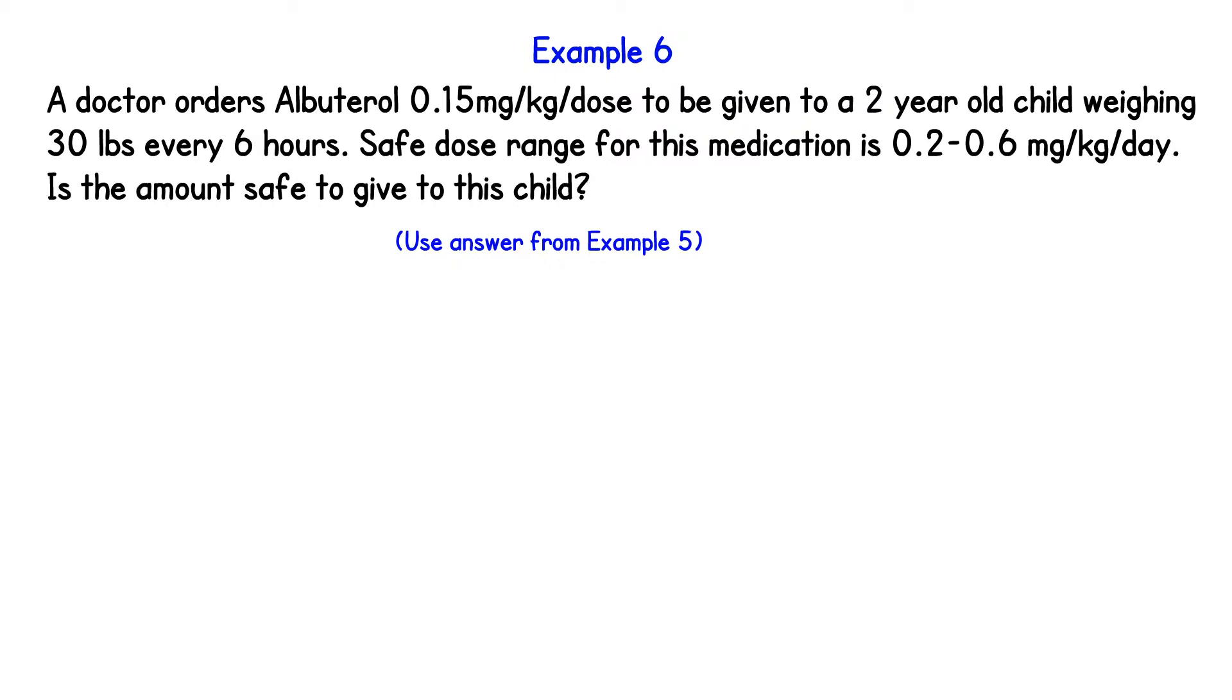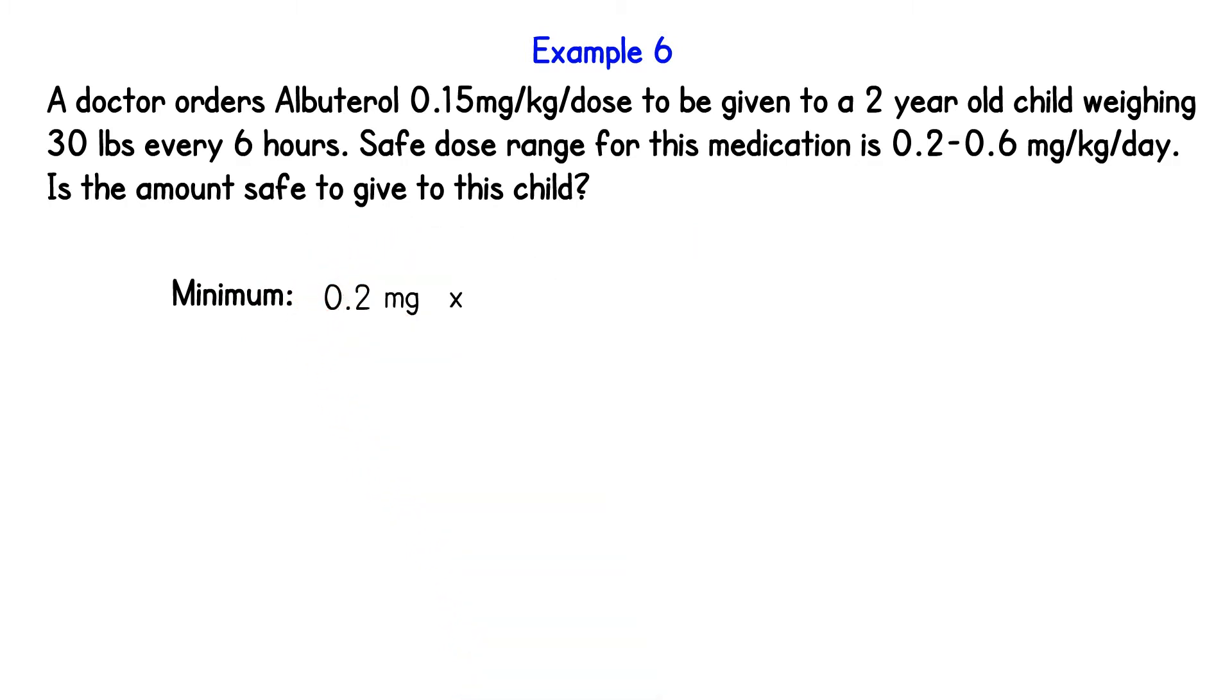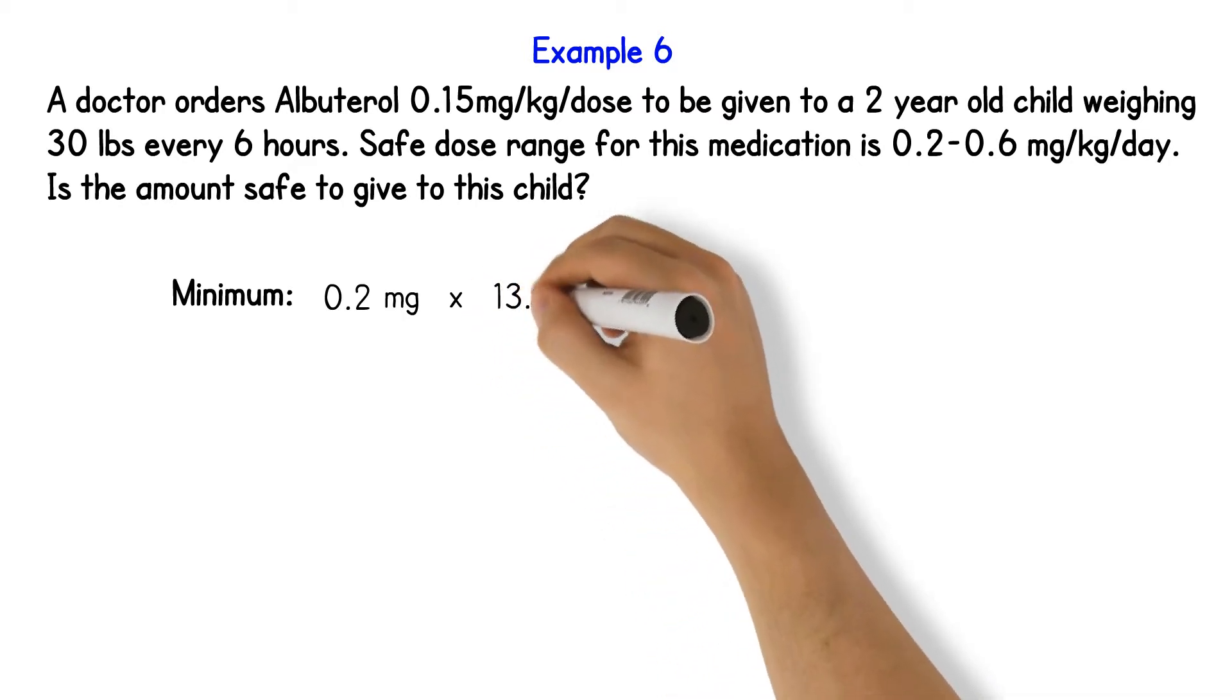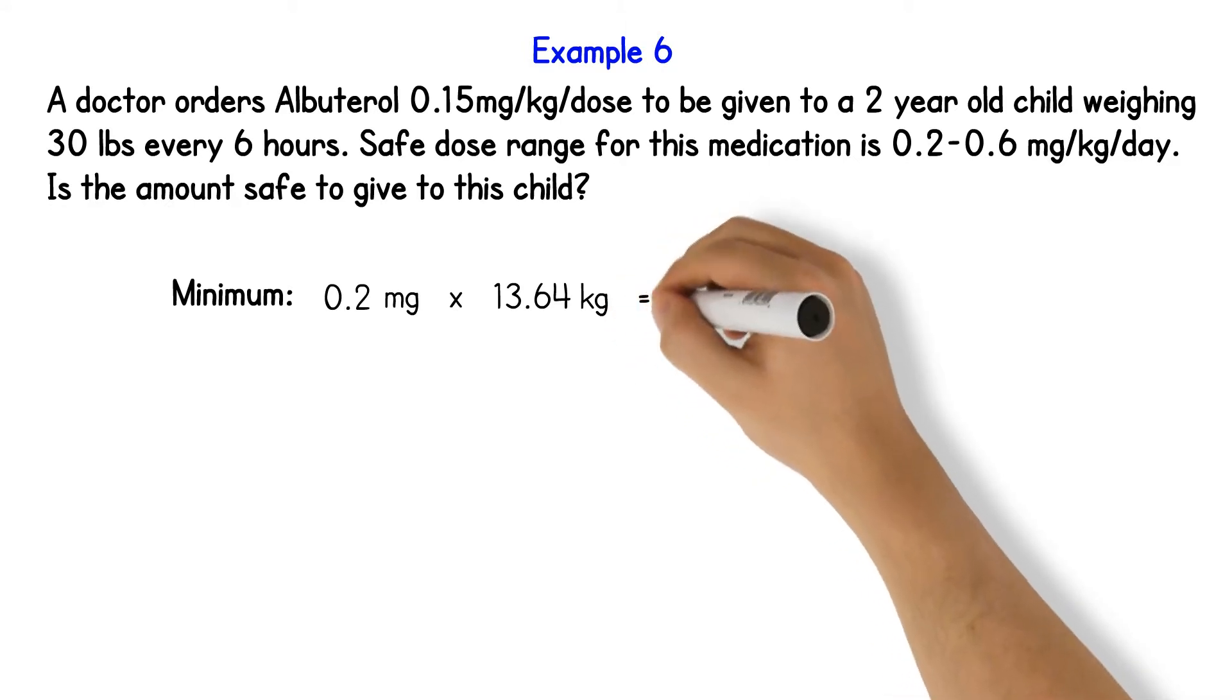We times it by the milligram for both minimum and maximum. So for the minimum we take 0.2 milligram times 13.64, and we'll get 2.728 milligram.